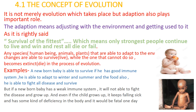As it is rightly said, survival of the fittest, which means only strong individuals continue to live and win, while the rest die or fail. Any species — whether human beings, animals, or plants — that are able to adapt to environmental changes are able to survive, while those that cannot become extinct. For example, a newborn baby is able to survive if it has a good immune system, able to adapt to winter, summer, and food, and fight disease. But if a newborn baby has a weak immune system, it will not be able to fight disease and grow up, and may fall ill repeatedly with a fatal outcome.